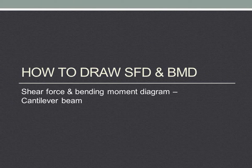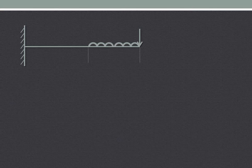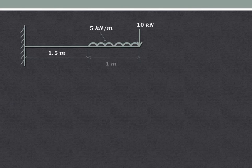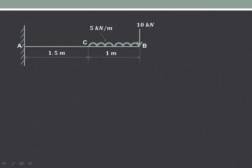We will try to understand how to draw shear force and bending moment diagrams in the case of a cantilever beam. As shown here, we have a point load acting at the free end of the beam, and a UDL of 5 kN per meter acting at a distance of 1 meter from the free end.